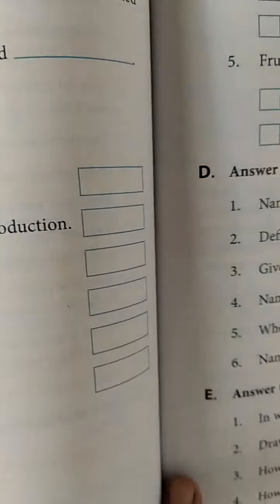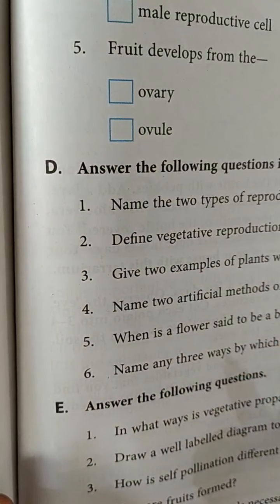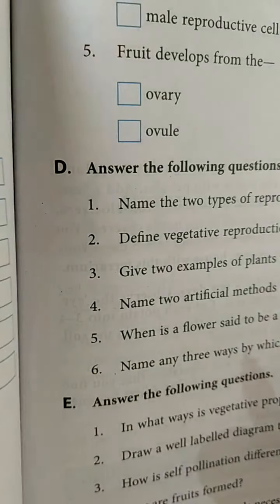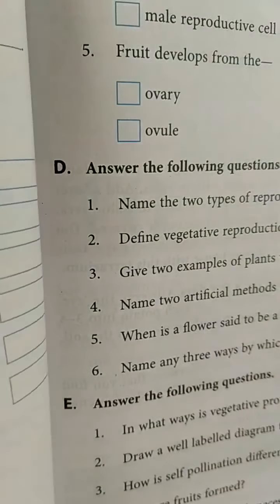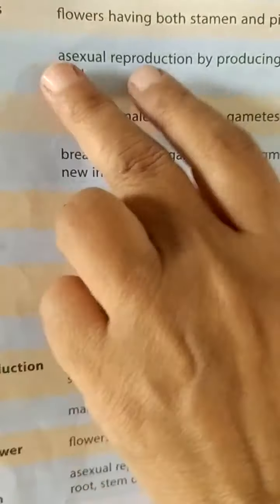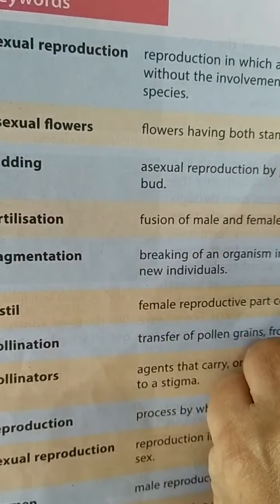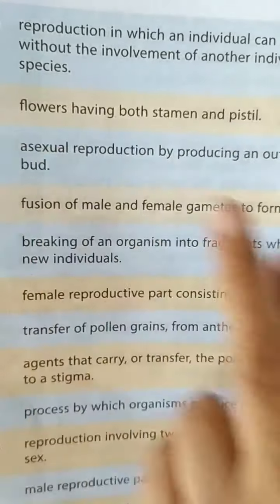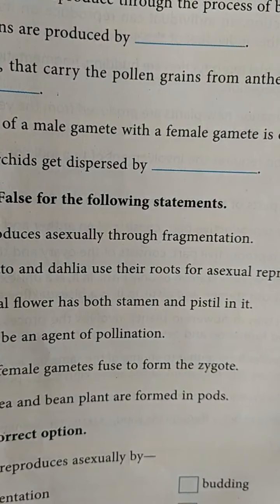Fifth question: when is a flower said to be bisexual? It is given in your book's keywords on page 140. A flower having both stamen and pistil is said to be a bisexual flower.